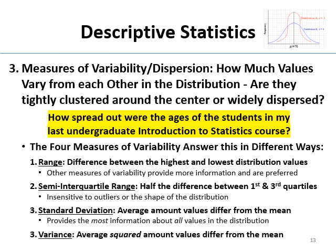Now I have to bring up the variance. Variance is the squared standard deviation — it's the average squared amount that values differ from the mean. I have to bring it up because later on we're going to be doing something called analysis of variance, and I need you to know what variance is.